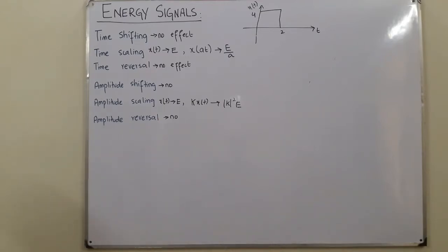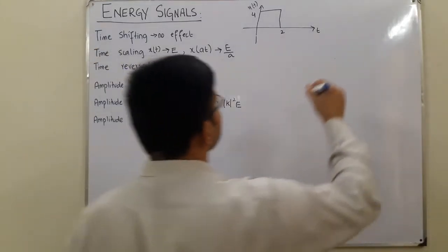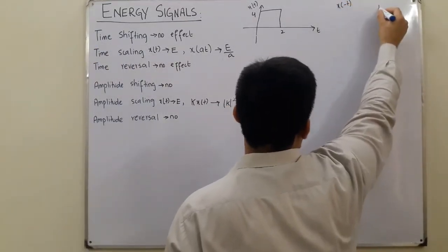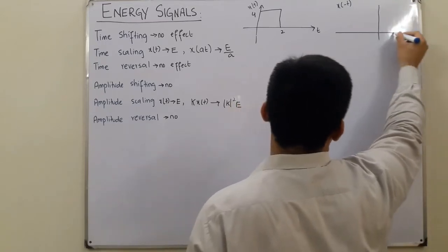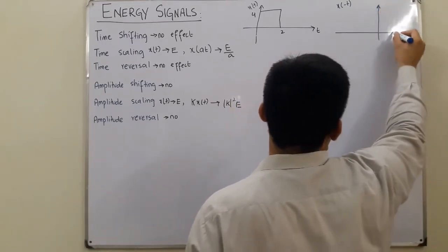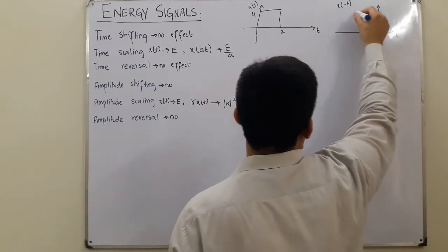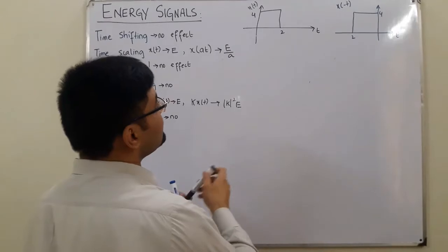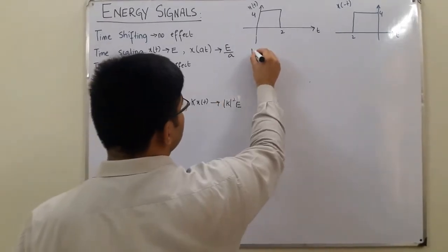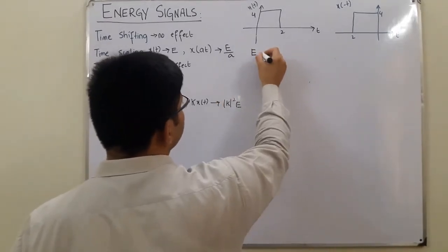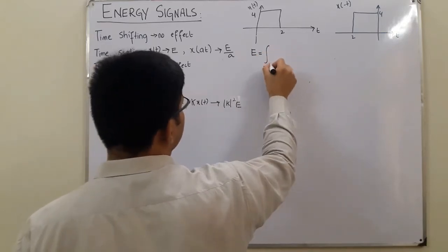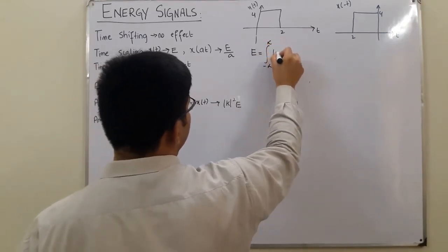The simplest to discuss is time reversal. If I have x(-t), that means I would just flip it around the y-axis. So let me first calculate the energy of the original signal. The energy of the original signal is the integral from negative infinity to positive infinity of |x(t)|² dt.